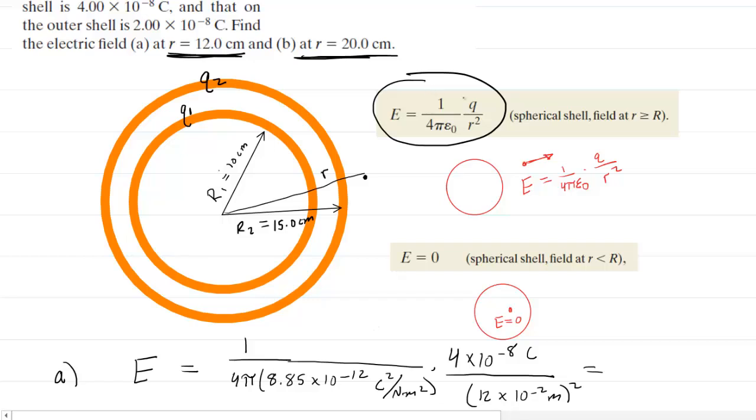Remember, the first result of Gauss's law for spherical shells says if you're outside of the spherical shell, then just use this equation to calculate the electric field. Because we're outside of both of the shells, we're going to have to use this equation twice, one for each shell.